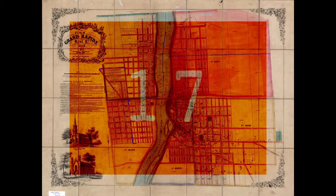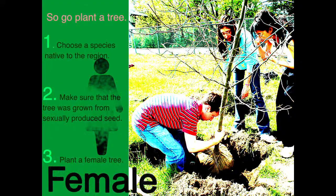So, go out and plant a tree, and remember these three things. One: choose a species of tree that is native to the region, because this improves genetic diversity. Two: make sure the tree was grown sexually, from seed. And three: plant a female tree. Thank you.